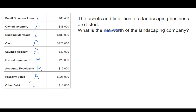If you see accounts payable, that's a liability also — just noting that. We're going to add the assets and subtract the liabilities: 48,000 minus 80,400 minus 189,000 plus 126,000 plus 32,000 plus 20,000 plus 15,000 plus 225,000 minus 16,000. We get a total net worth of $180,600.